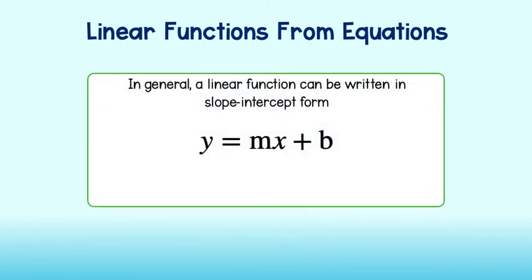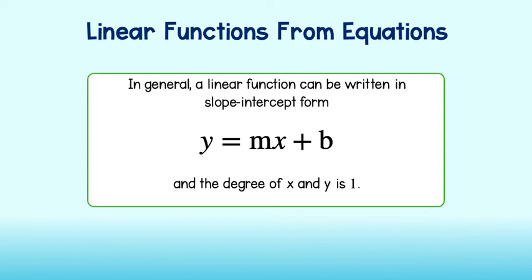In general, a linear function can be written in slope-intercept form, y equals mx plus b, where m is the slope and b is the y-intercept. The degree or exponent of both variables x and y must be 1. And if a variable does not have an exponent, it is assumed that the degree is 1.